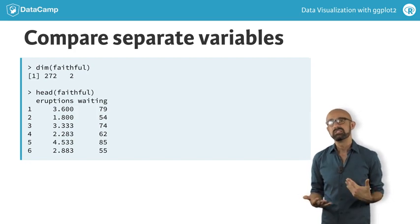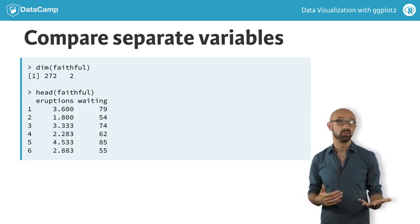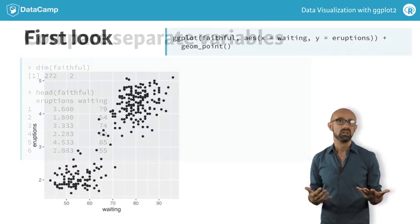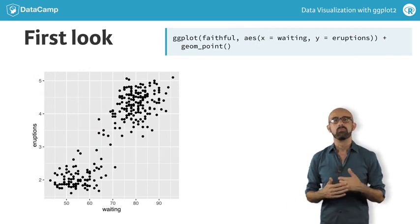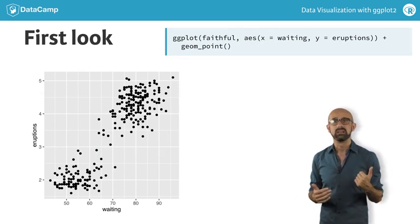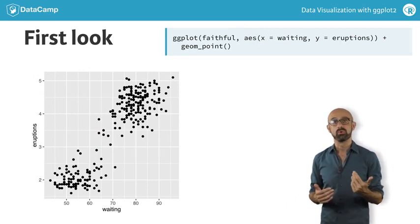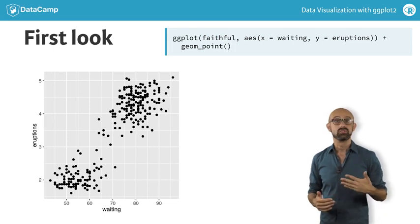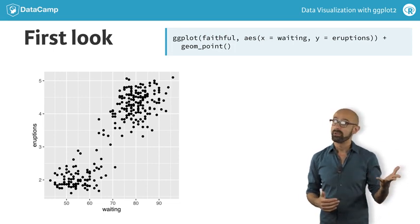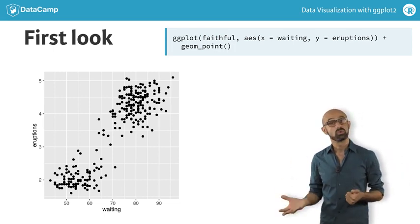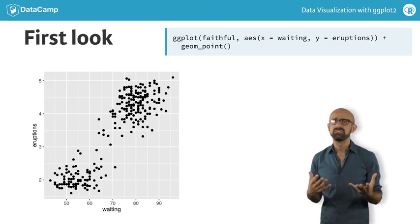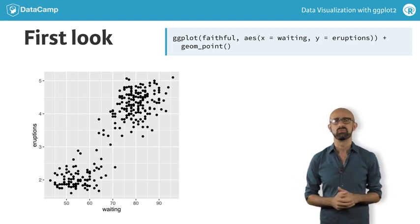At the outset, it appears as if the main relationship between these two variables is linear, which would be correct. But more subtle than that, the data is also bimodal on both axes — that is, you either wait a long time and get a long eruption, or you wait a short time and get a short eruption. There are relatively few data points in between.